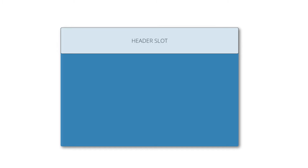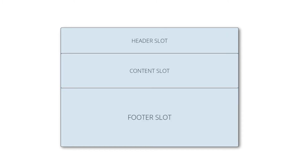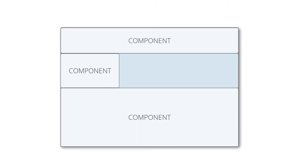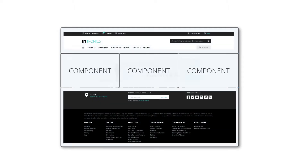The default standard page template offers three predefined slots: header, content and footer. Every slot can be filled with components in order to create a page structure. Intershop offers the functionality to fill components with additional components by using their slots. In this way, you can easily set up your page layout in many levels.